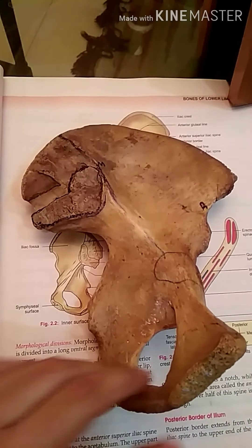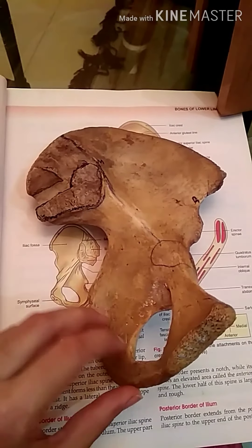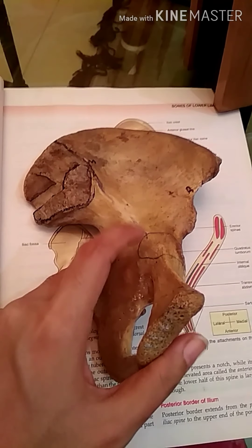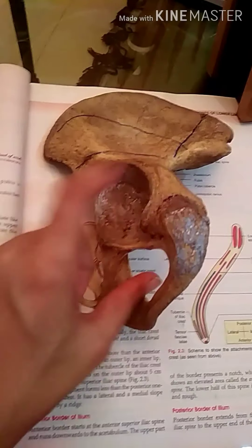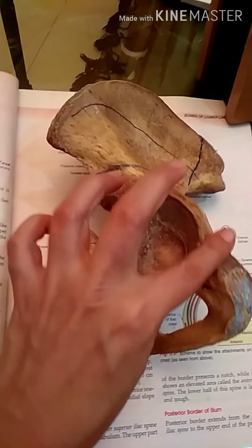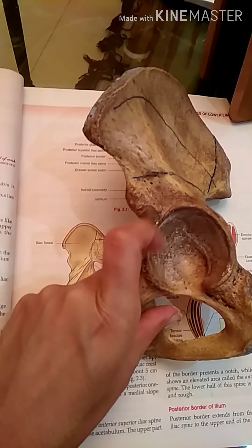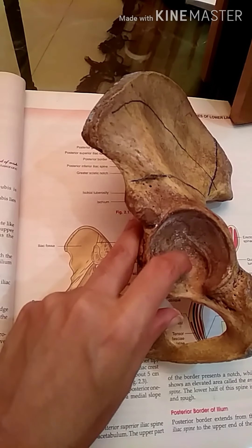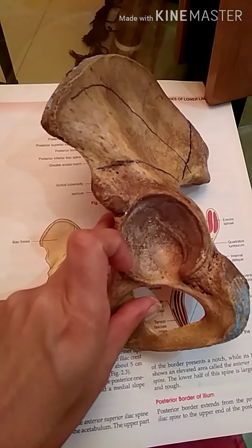This is the hip bone. To determine the side of the hip bone, you must remember at least two to three points. The first point is that this fossa is the acetabulum, which is going to receive the head of the femur to form the hip joint.